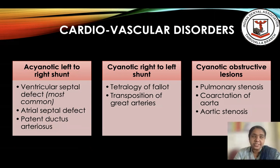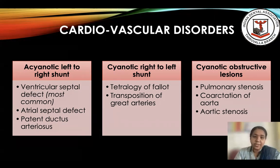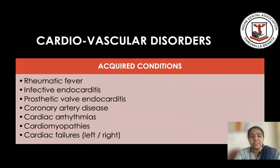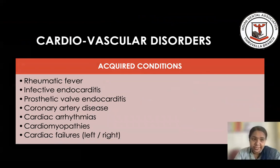The cyanotic shunt conditions you might see in patients are tetralogy of Fallot and transposition of the great arteries. Both these conditions are not very commonly seen, but we do get to see patients with these. The acquired conditions in children — the most commonly seen is rheumatic fever or rheumatic heart disease, and a previous history of infective endocarditis in patients who have had a prosthetic valve.